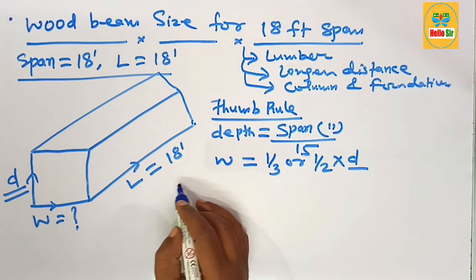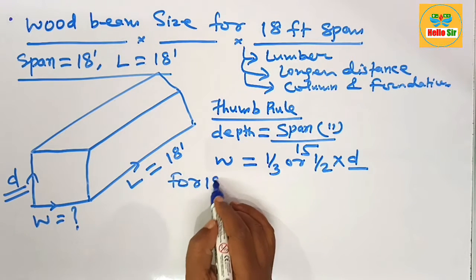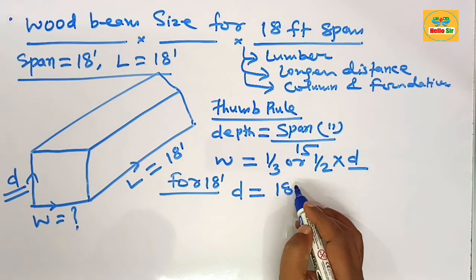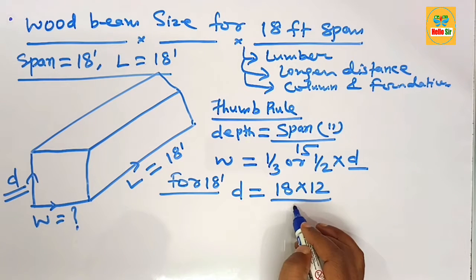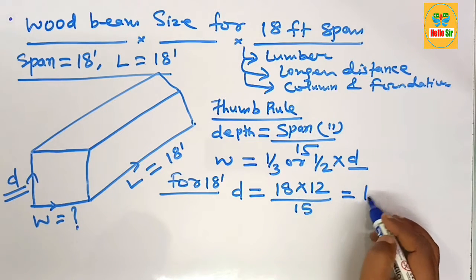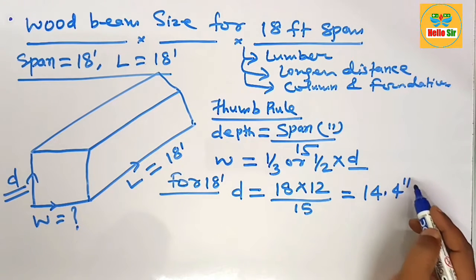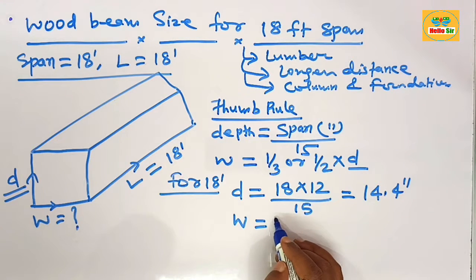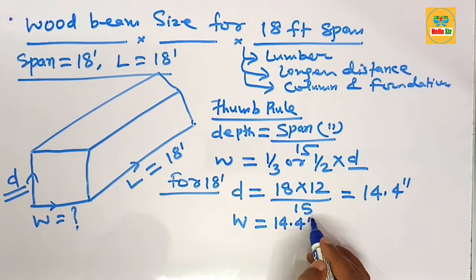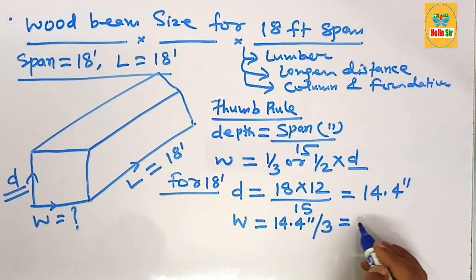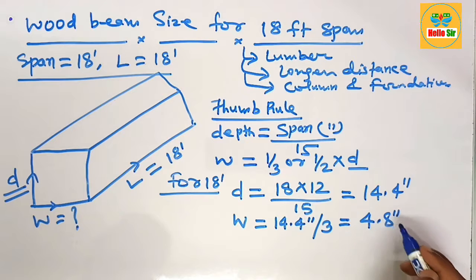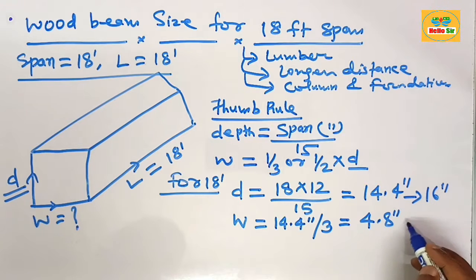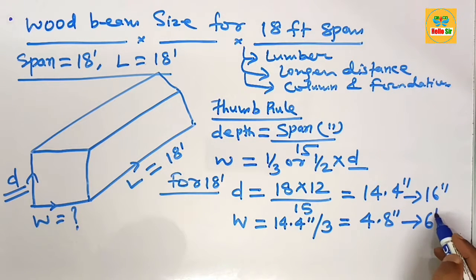For an 18-foot span, the depth of the beam equals the span in inches — 18 multiplied by 12 — divided by 15, which comes to about 14.4 inches. The width section of the beam is one-third of the depth section: 14.4 inches divided by 3, which comes to about 4.8 inches. Rounding up, depth converts to 16 inches and width converts to 6 inches.